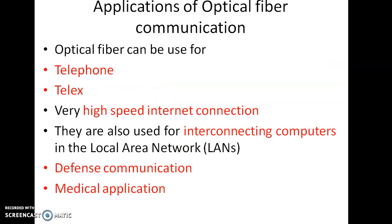These are the applications of optical fiber communication. As already seen, the telephone converts sound to electrical signal, then electrical to optical pulse, then optical pulse to electrical signal, and finally electrical pulse back to sound. Very high speed internet connections are possible because information is in the form of light pulses — light travels at 3 × 10⁸ meters per second. Interconnecting computers in a local area network also uses optical fibers. Defense communication means military applications. Medical applications are also there.